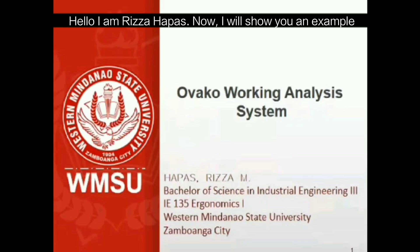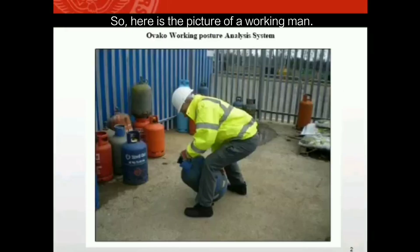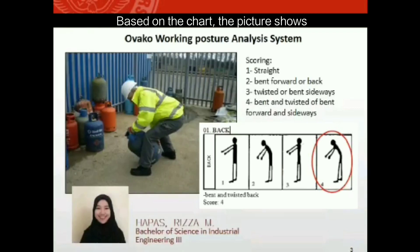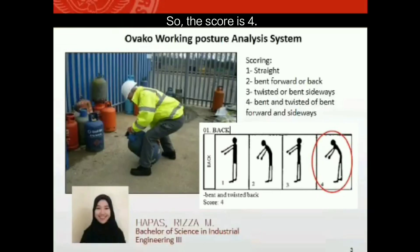Here is an example of the OWAS working analysis system. Looking at a picture of a working man, we begin with his back posture. Based on the chart, the picture shows that his back is bent forward and twisted, so the score is four.